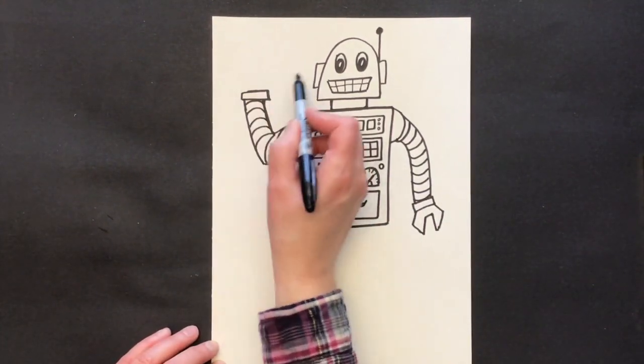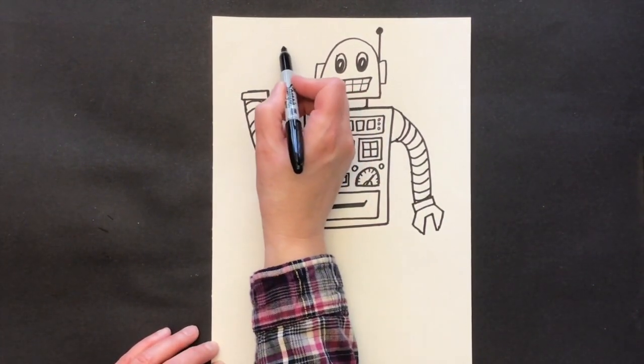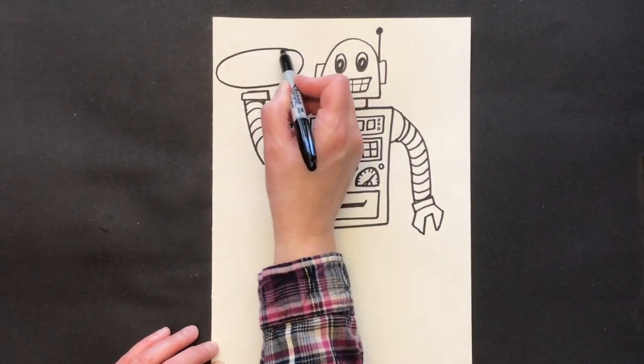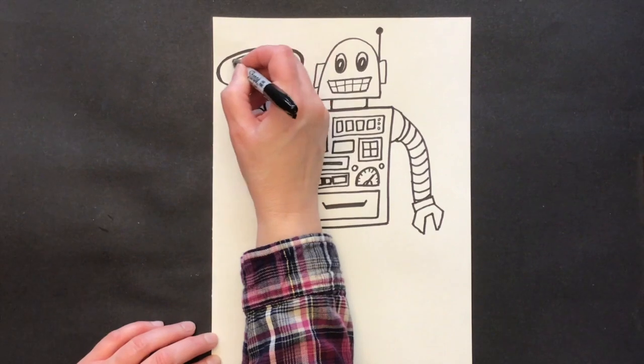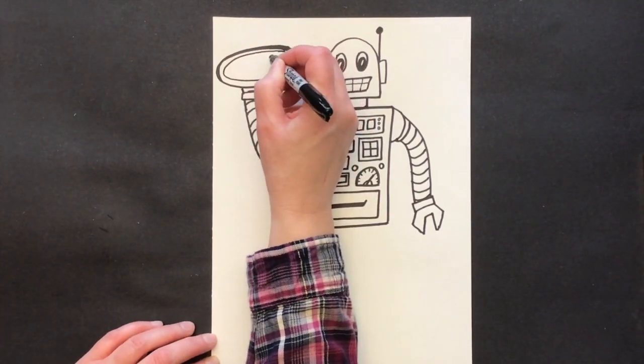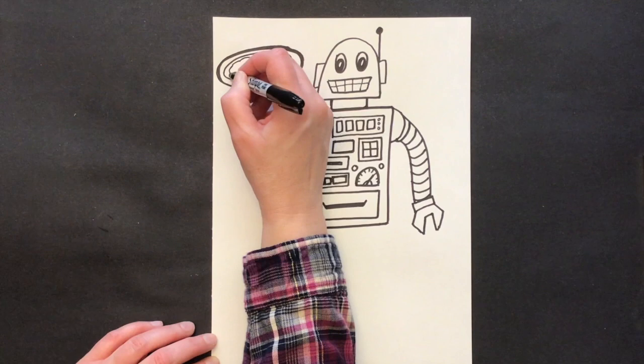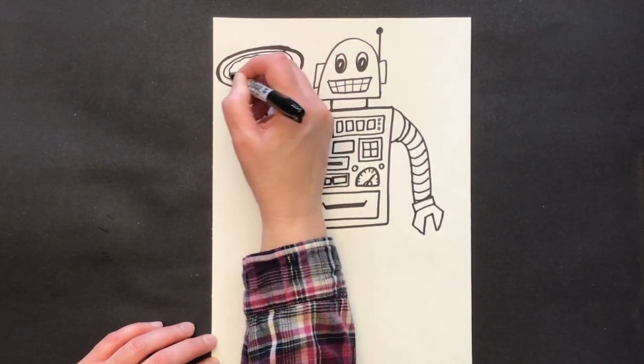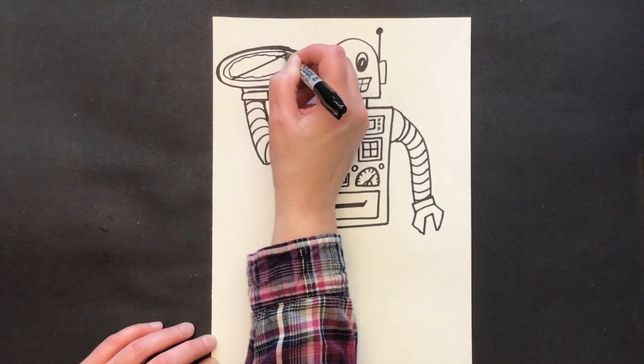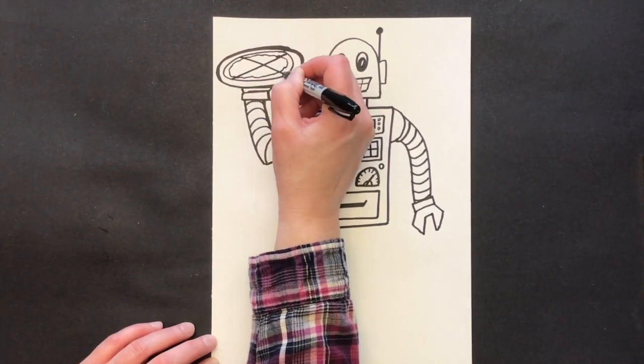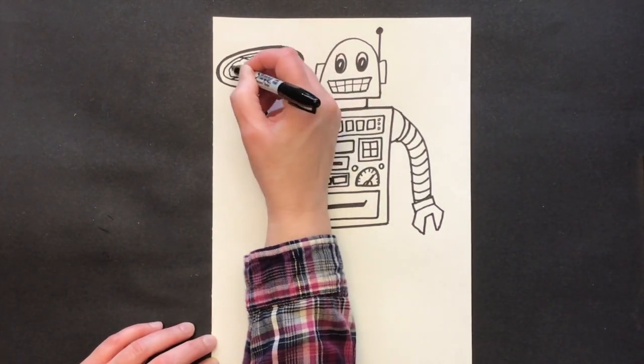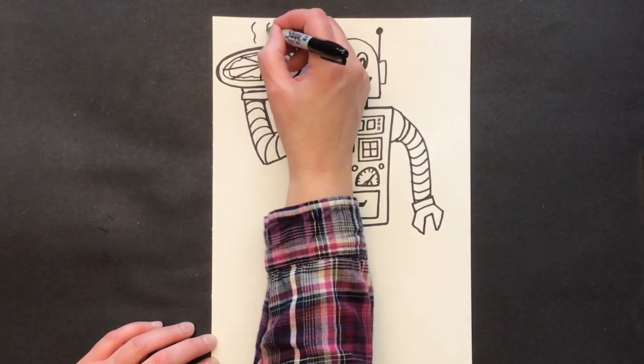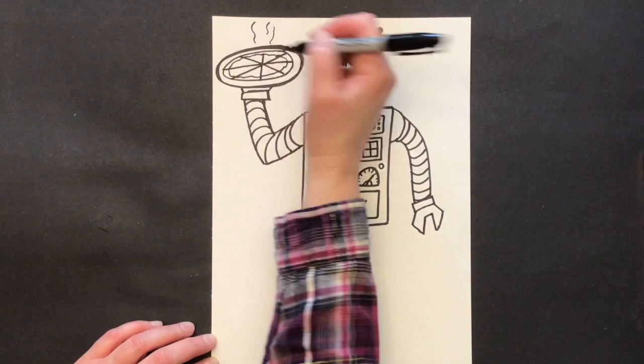This guy is going to have a hand that can turn into a big tray. So I'm going to draw an oval up here to hold my pizza. And of course I have to draw a pizza. And it's hot, so I'm going to do some little steam lines. Oh, it smells good.